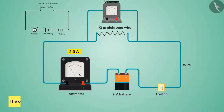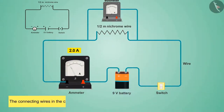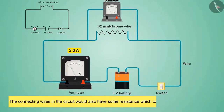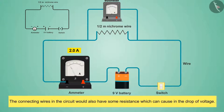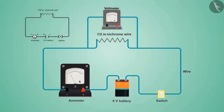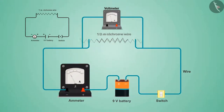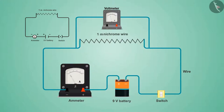We know that the connecting wires in the circuit would also have some resistance, which can cause a drop in voltage. But to understand the theory here, the drop in voltage due to connecting wires is not taken into consideration. For this reason, only the potential difference that the battery is producing is taken into account. Now let's replace this with the one-meter wire.